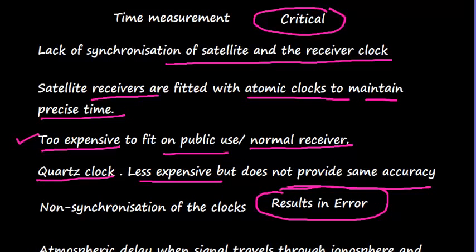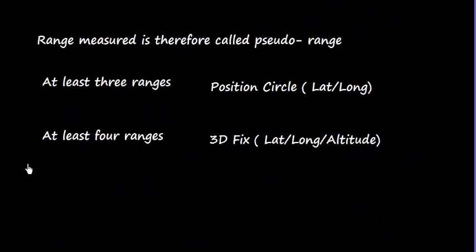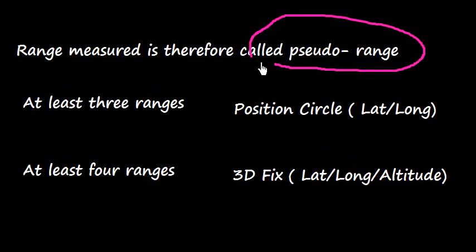Another important aspect is that there could be atmospheric delay, which means when the signal travels through the ionosphere and troposphere, the signal may not reach at the time as per the calculation. There could be some delay. The range measured is therefore called pseudo range, and it contains some error. That's why it is called pseudo range.